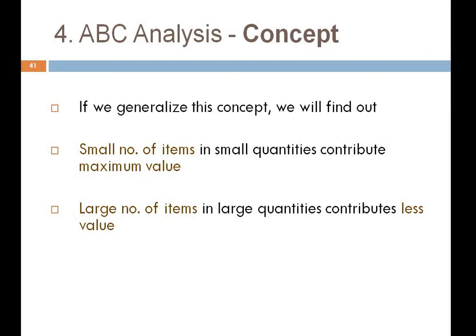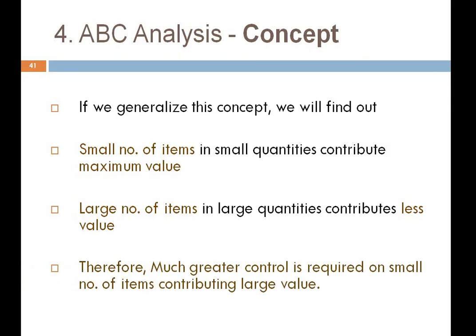Large number of items in large quantities contributes less value. Therefore much greater control is required on a small number of items contributing to large value. The quantity of shockers is only four, but they contribute 2,000 rupees out of the total 2,100 rupees. Conversely, 100 nuts contribute only 100 rupees, so much greater control is required on the smaller number of high-value items.